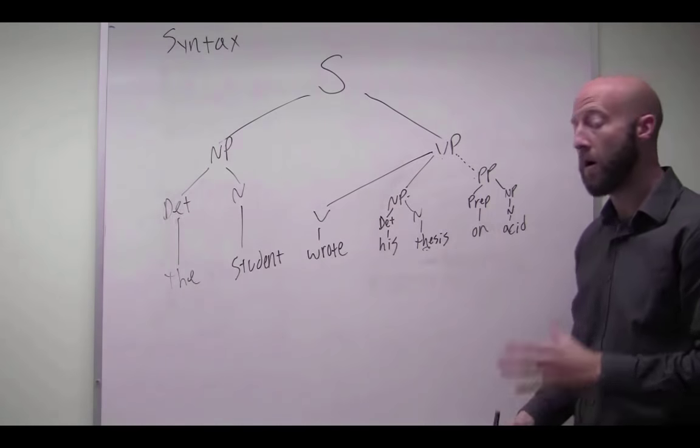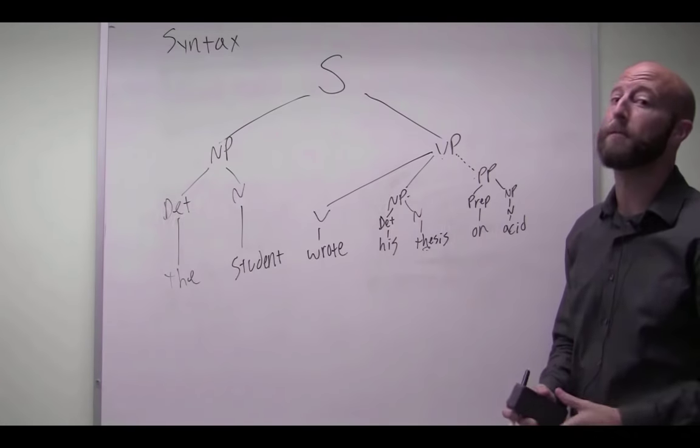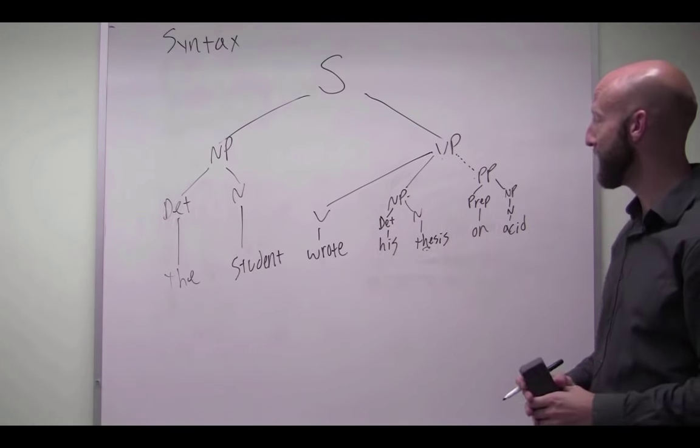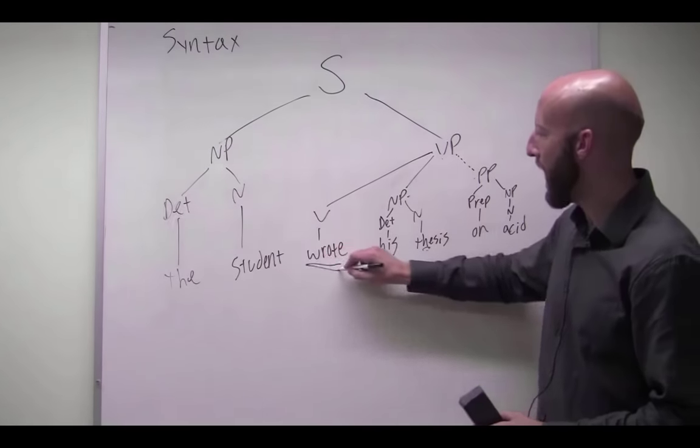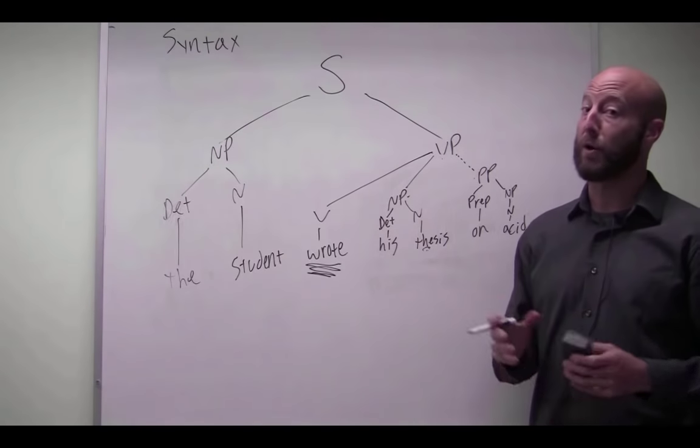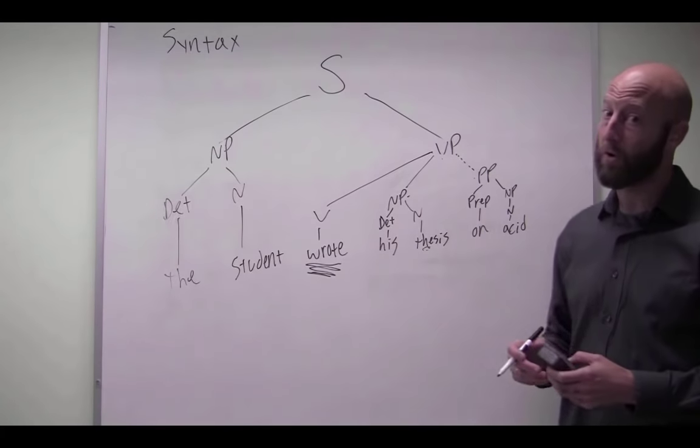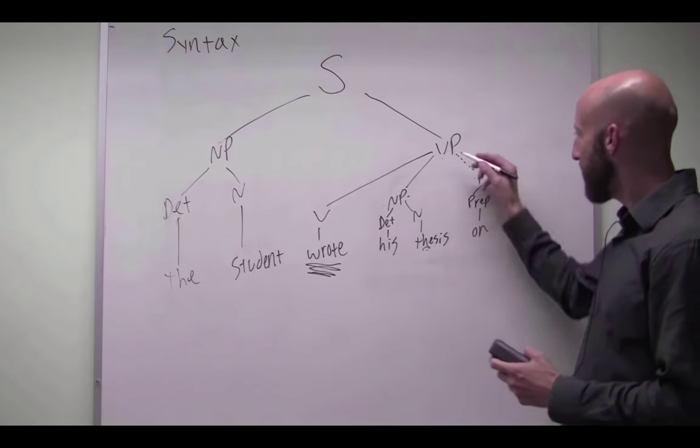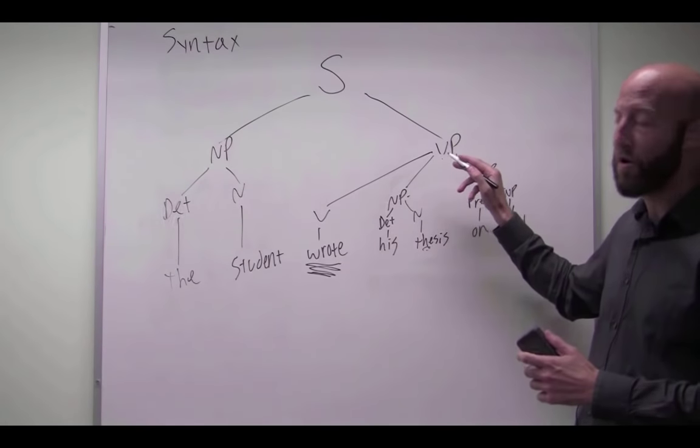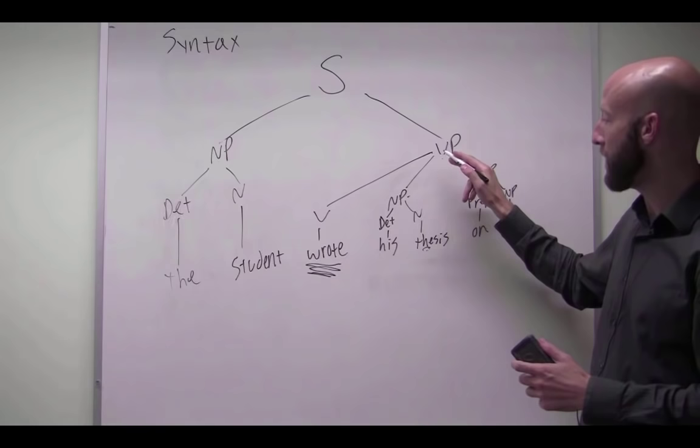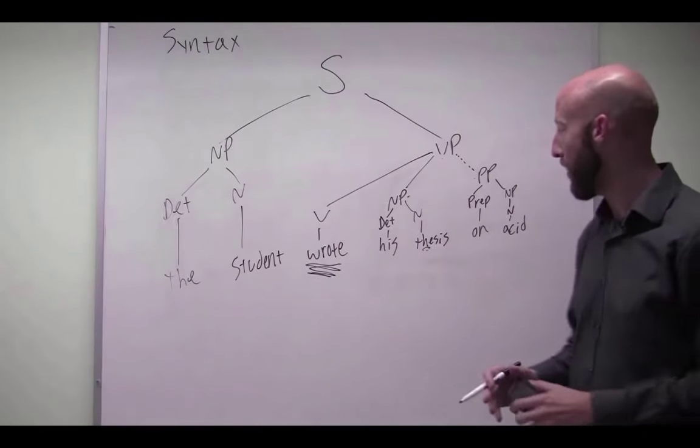Why, you may ask? Well, on that meaning, that he was under the influence of acid when he wrote his thesis, we're saying something about how he wrote his thesis. Sloppily, a lot of crazy, whacked out ideas. After all, he's on acid. So because of that, we have to connect it to a different node, the entire verb phrase here. So it has domination over everything below it.